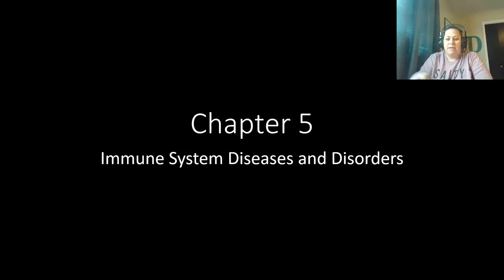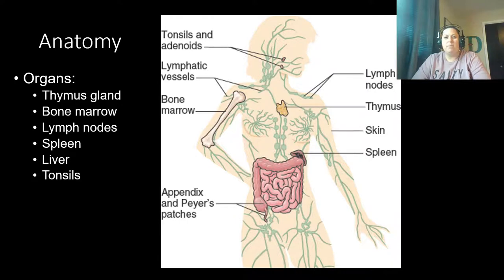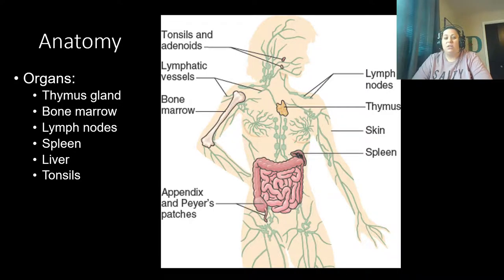We're going to do a quick review of the lymphatic system first — the anatomy. When looking at the anatomy of the lymphatic system, the organs present are the thymus gland and the bone marrow. Those two are considered the primary organs, responsible for actually producing the B lymphocytes and T lymphocytes.